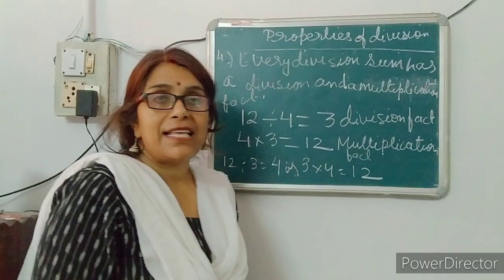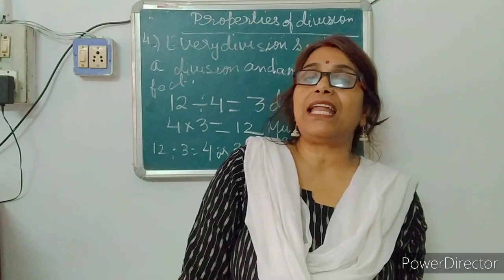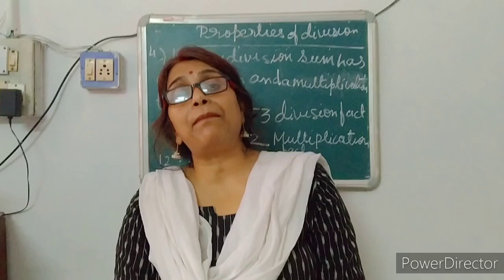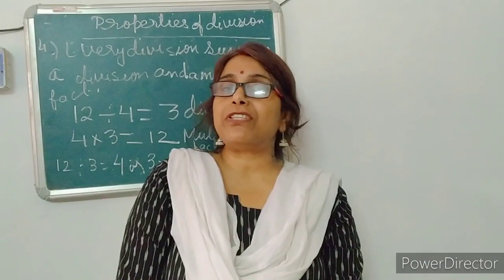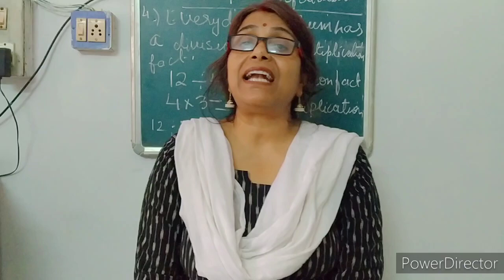In this way, we learned four properties of division. First is property by 1: any number divided by 1, we get the number itself. Second property is property of itself: if you divide the number by the same number, the quotient is 1. Third is property of 0: if 0 is divided by any number, the answer is 0. And the fourth property is: every division sum has a multiplication fact and a division fact.